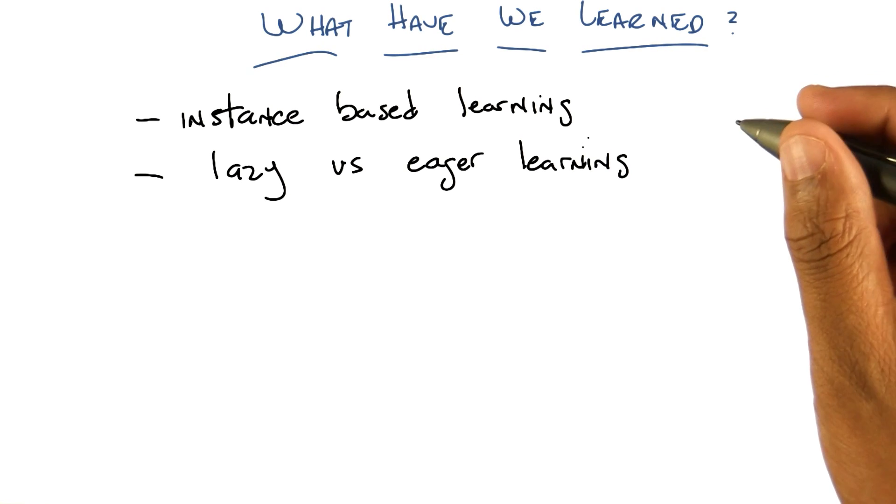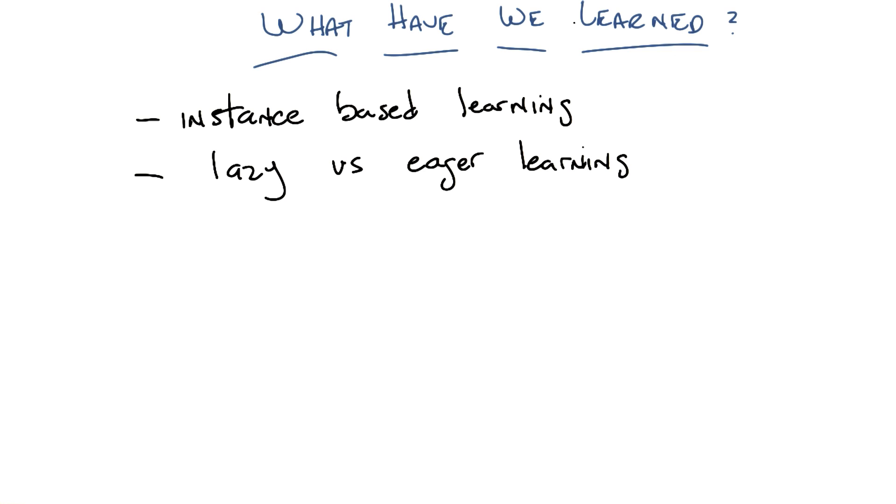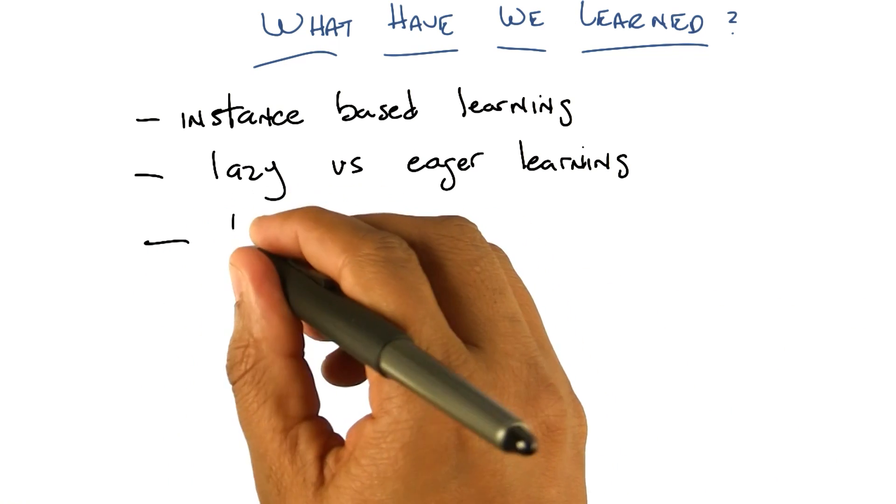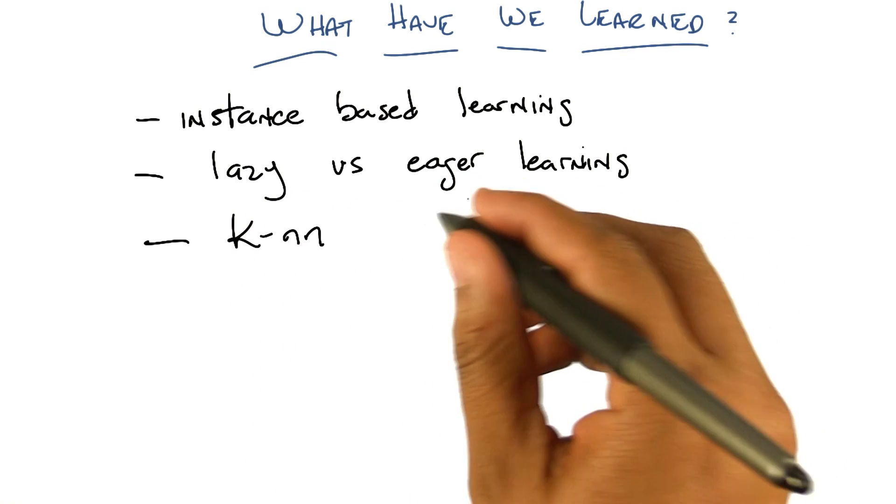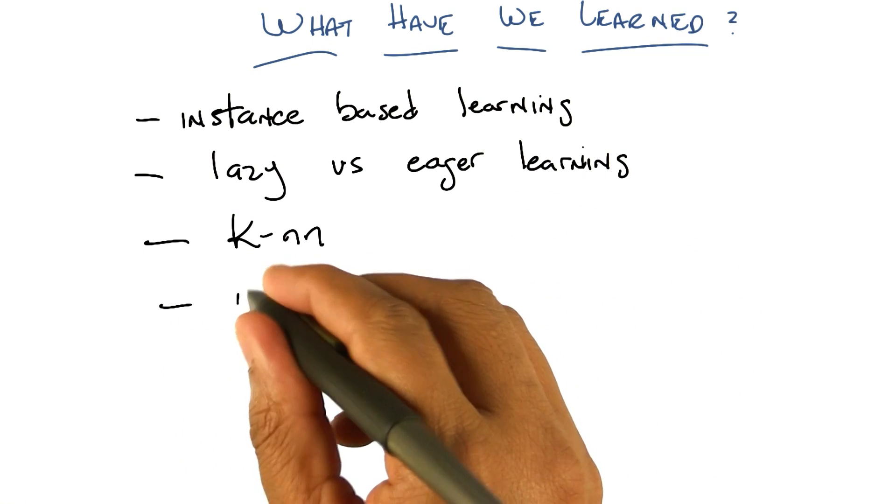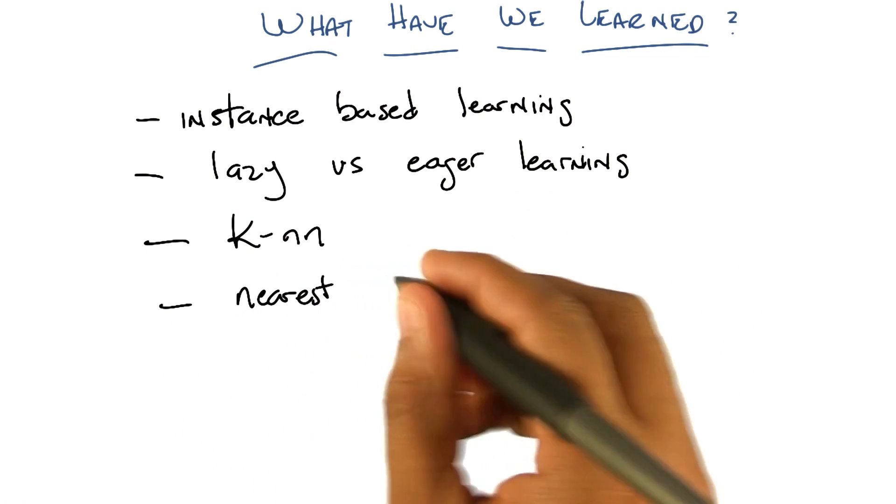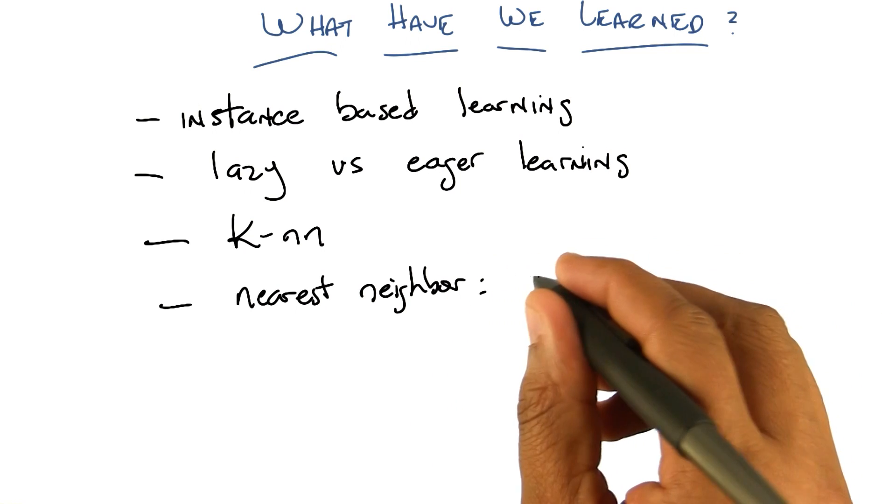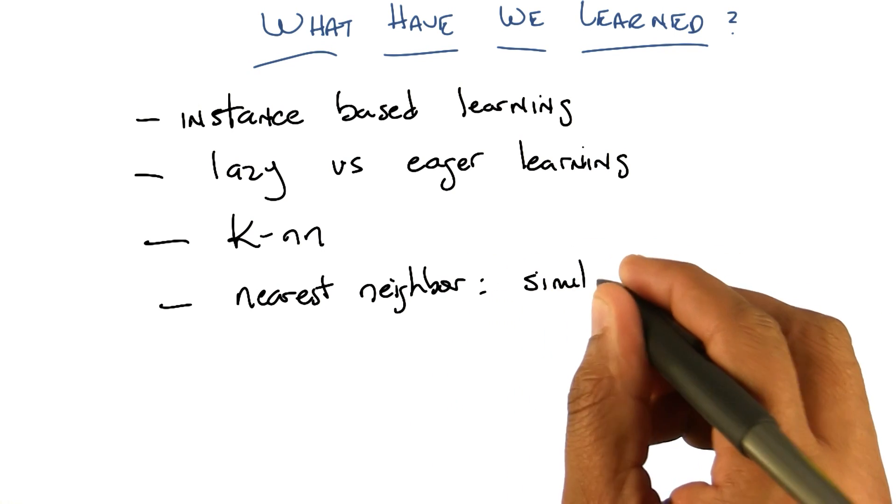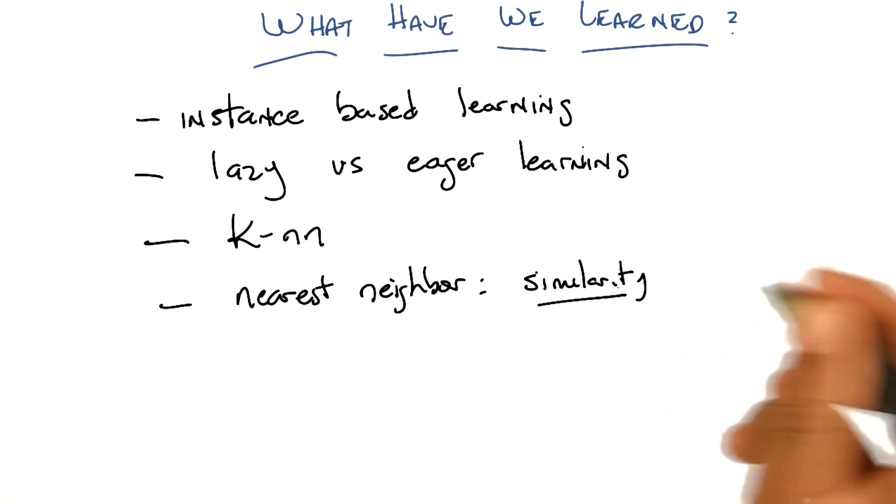Exactly right. What else? So as a concrete example of a lazy learner, we talked about k nearest neighbor, or KNN. Yeah, and this whole notion of nearest neighbor is, in fact, one way of talking about similarity functions.